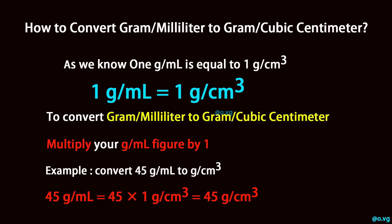To convert gram per milliliter to gram per cubic centimeter, multiply your gram per milliliter figure by 1. Example: convert 45 gram per milliliter to gram per cubic centimeter. 45 gram per milliliter is equal to 45 times 1 gram per cubic centimeter, which equals 45 gram per cubic centimeter.